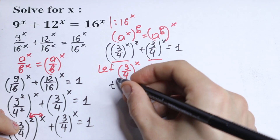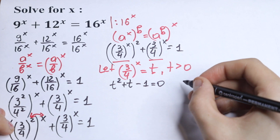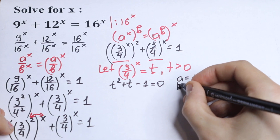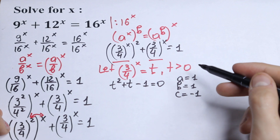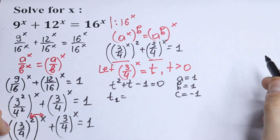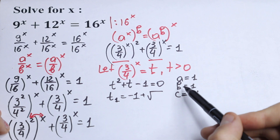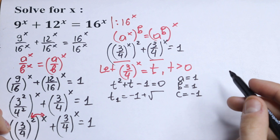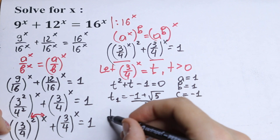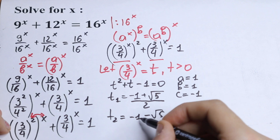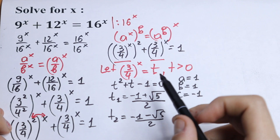We now have the quadratic equation t squared plus t minus 1 equal to 0. Using the quadratic formula with a equal to 1, b equal to 1, and c equal to minus 1, we get t1 equal to minus 1 plus square root of 5 over 2, and t2 equal to minus 1 minus square root of 5 over 2. Since we wrote that t must be greater than 0, let's check both roots.